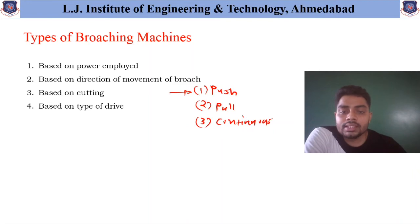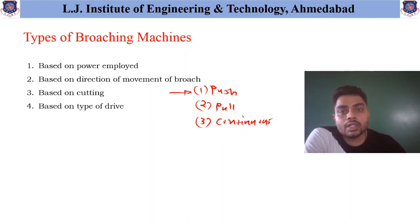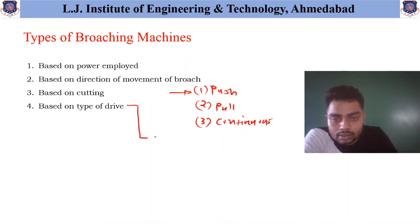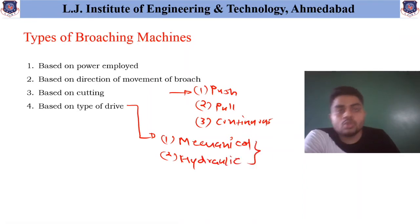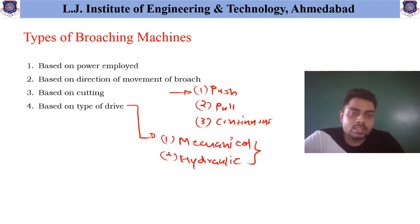The fourth classification is based on type of drive — how the actual broaching movement is obtained. According to that, it may be a mechanical drive or it may be a hydraulic drive. Power transmission may take place by means of mechanical devices or by means of hydraulic devices.